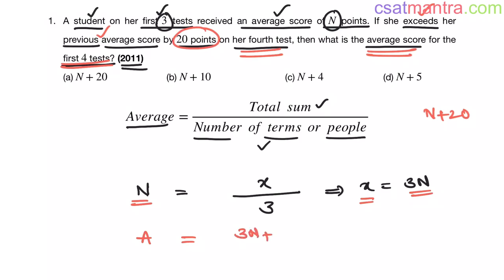Plus in fourth test she has obtained N plus 20, divided by number of terms, number of tests. How many? 4. So this is 4N plus 20 by 4. This equals N plus 5.